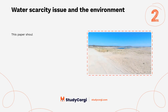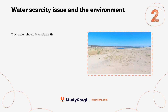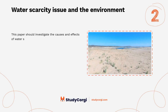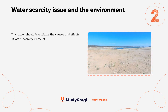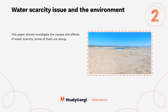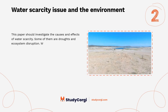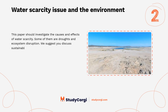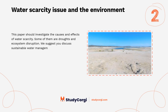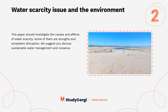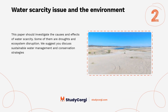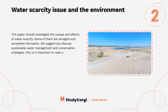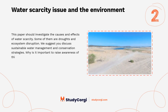Water scarcity issue and the environment. This paper should investigate the causes and effects of water scarcity — some of them are droughts and ecosystem disruption. We suggest you discuss sustainable water management and conservation strategies, and why it is important to raise awareness of this issue.